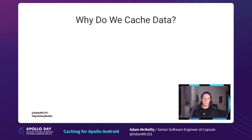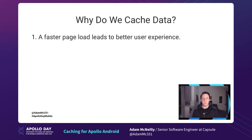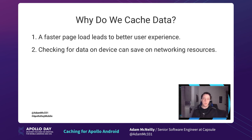Why would we do something like this? Well, a faster page load creates a better user experience. There's no need to make the user wait if we can serve them that data faster, and using a cache allows us to do that. Checking for data on device can also save on networking resources — over time, making so many network requests will take up more battery life on the phone. But if we can leverage a cache, we can cut down on those resources and create a much better user experience.